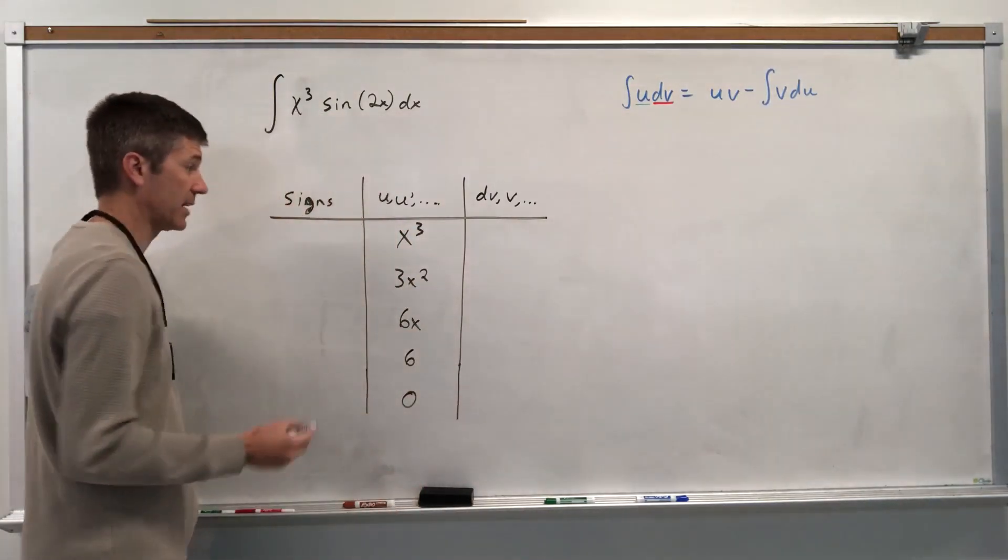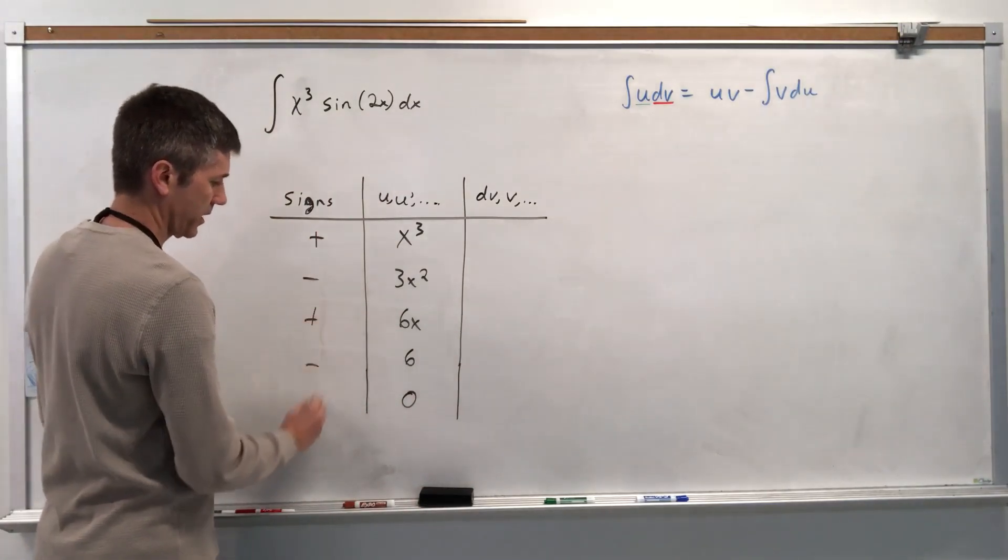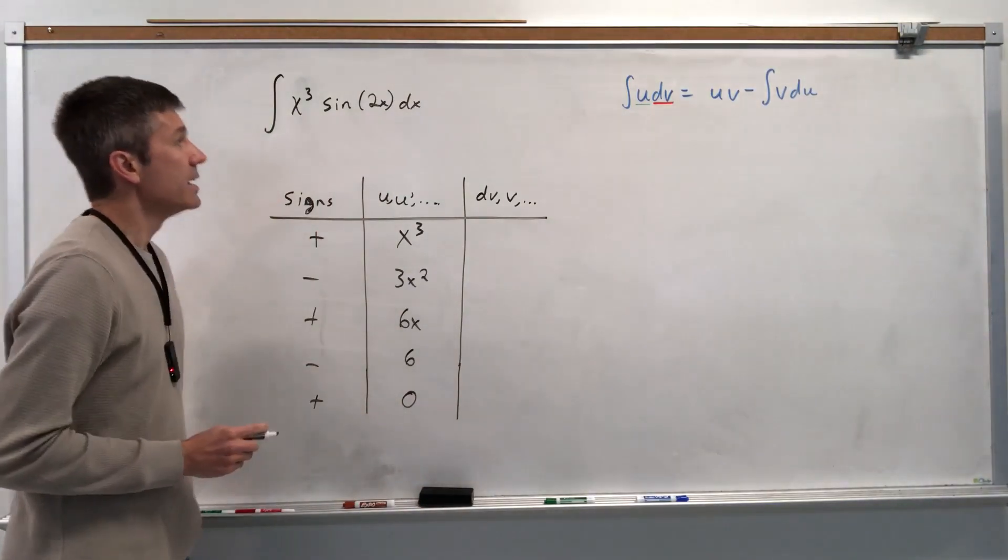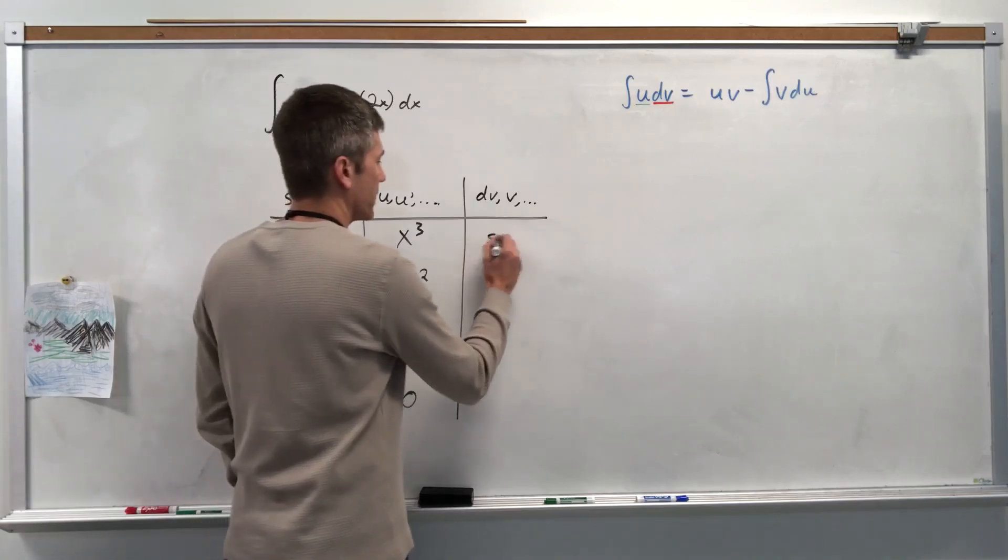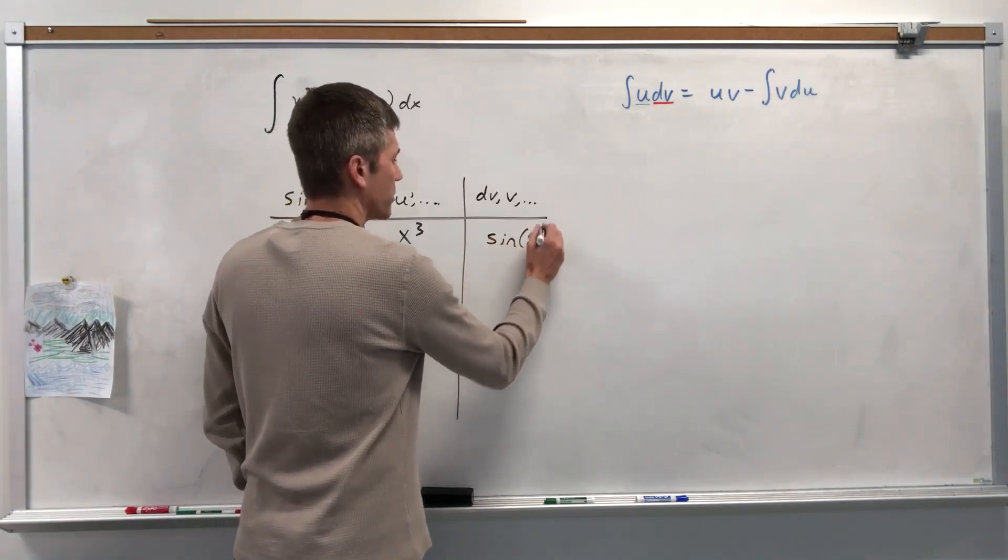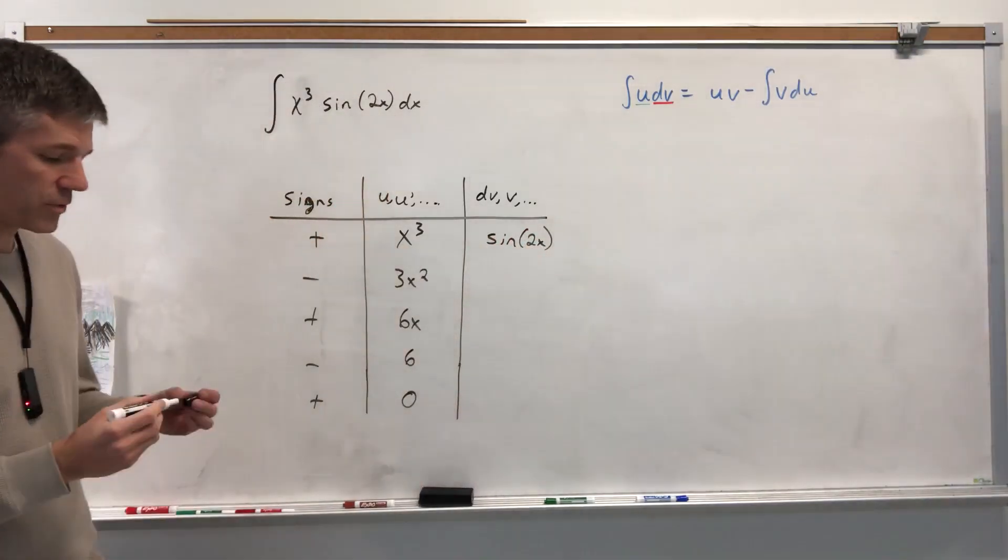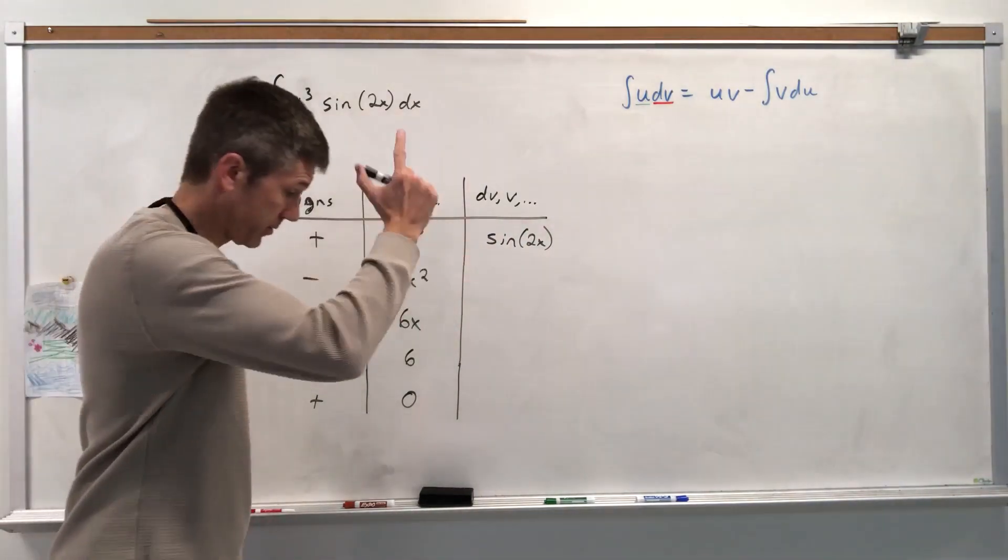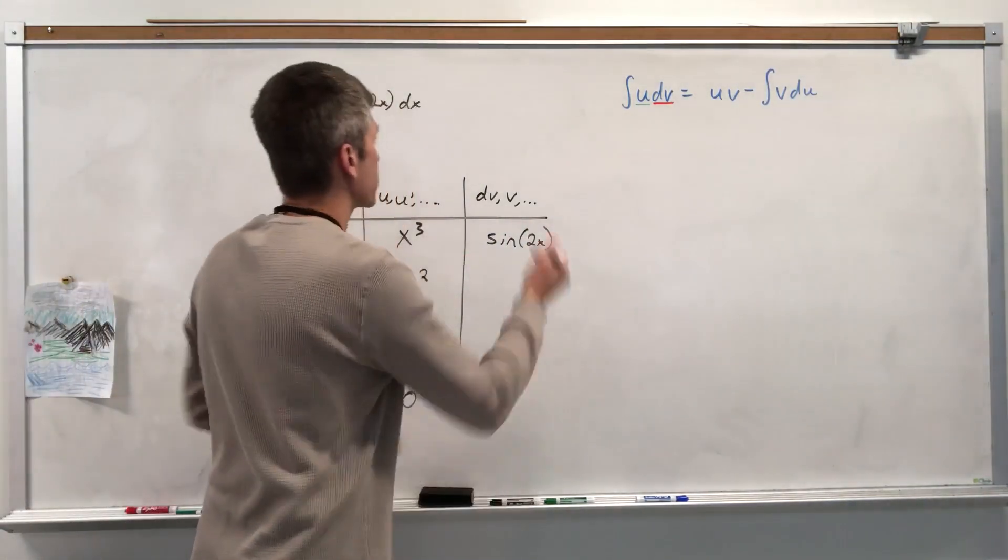Sines. Always start with positive, then negative, then positive, then negative, always alternate. dv, this is going to get tricky, is sine of 2x. And just for reference, I'm going to write our little square of derivatives of trig functions up here.